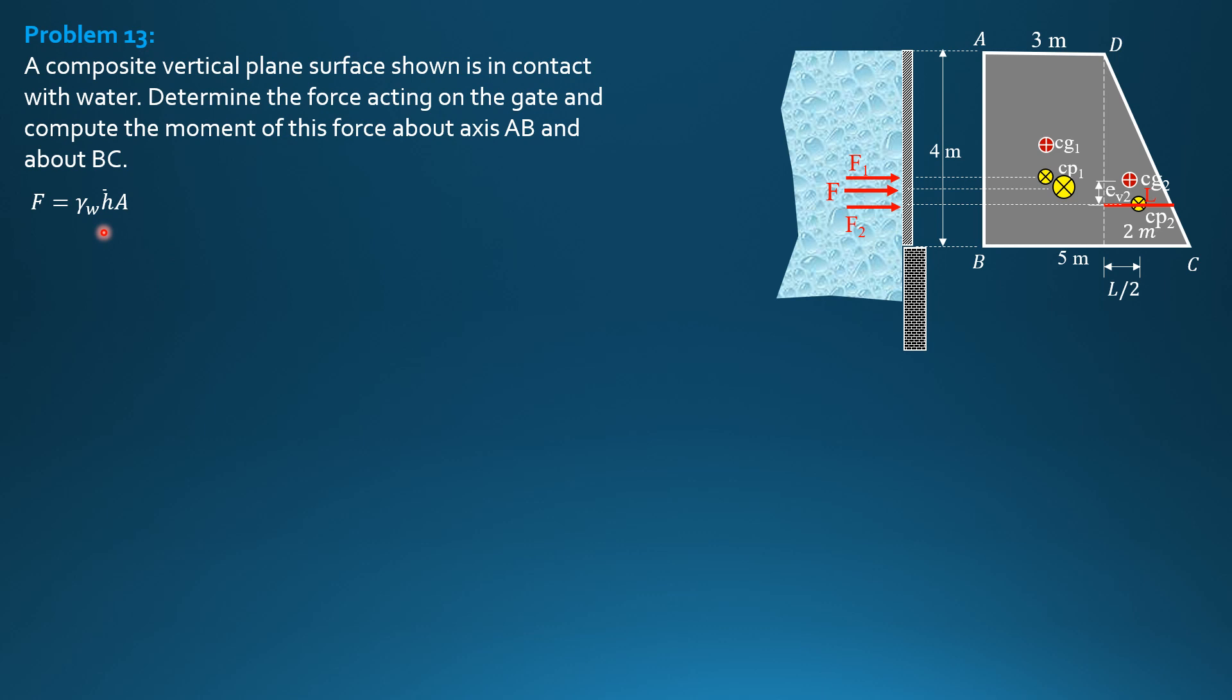F1 is 9.81. Bar H for area 1 is half of 4, so 2, and area is 3 meters by 4 meters. So F1 is 9.81 times 2 times 3 times 4, so F1 is 235.44 kilonewtons.